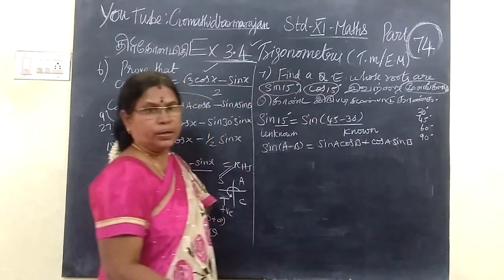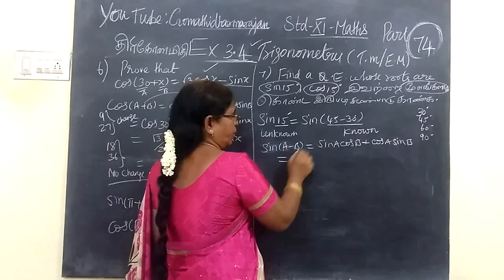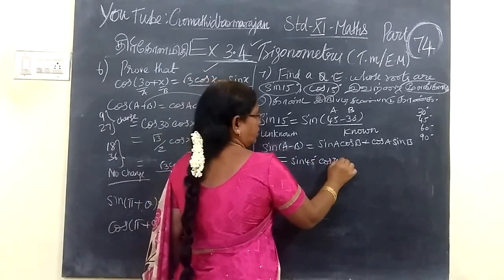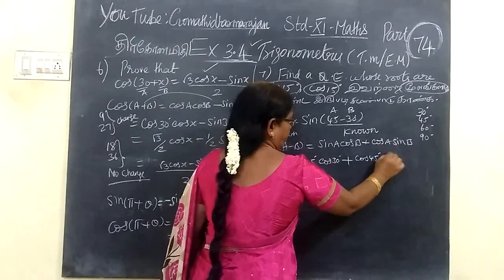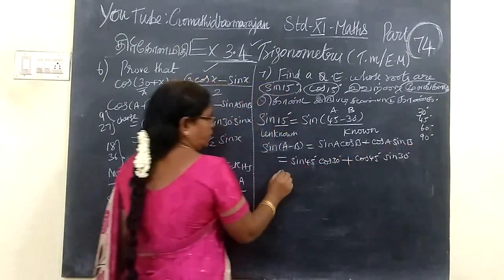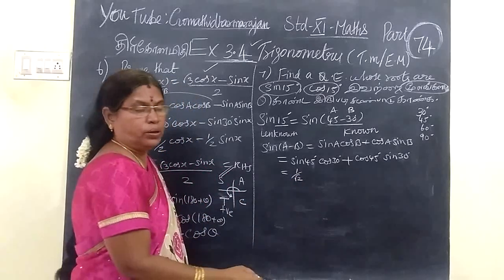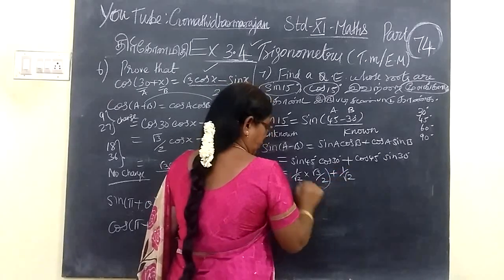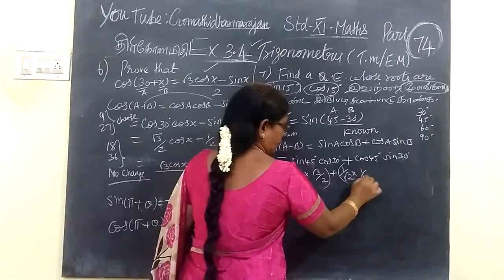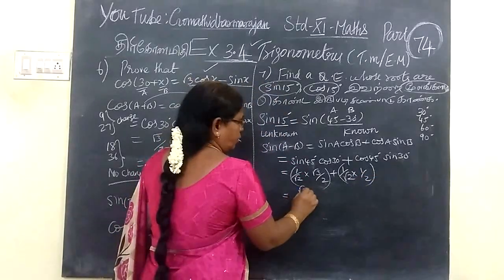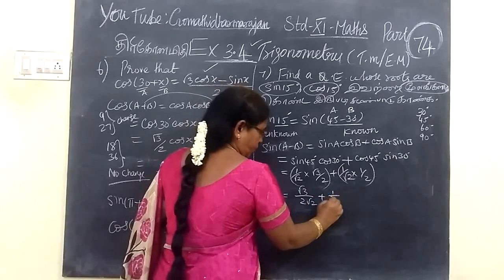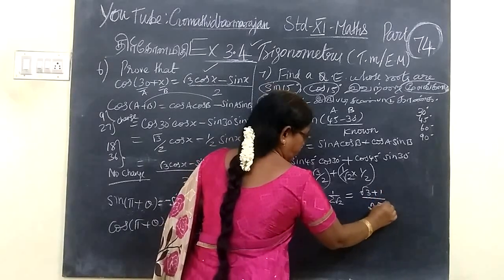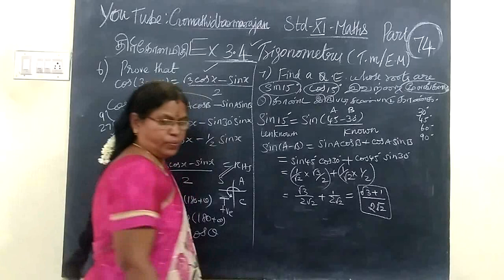So sin A cos B plus cos A sin B. In the place of A put 45 and B put 30. Sin 45 times cos 30 plus cos 45 times sin 30 gives 1 by root 2 times root 3 by 2, plus 1 by root 2 times 1 by 2. This equals root 3 by 2 root 2 plus 1 by 2 root 2, which is root 3 plus 1 by 2 root 2.